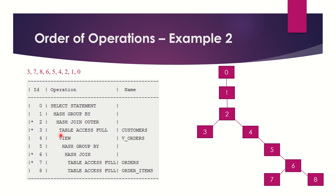So 3 and 4 are on the same level. Since 3 is on the top and 4 is on the bottom, I will write the third operation under 2 on the left-hand side and the fourth operation under 2 on the right-hand side. So operations 0 through 4 have now been depicted in this parent-child relationship tree.